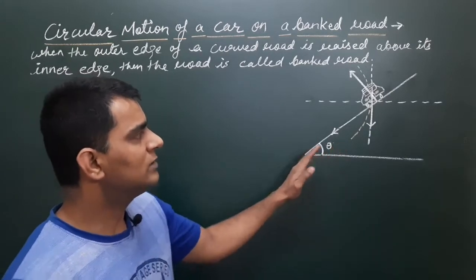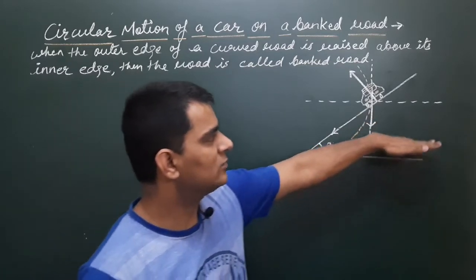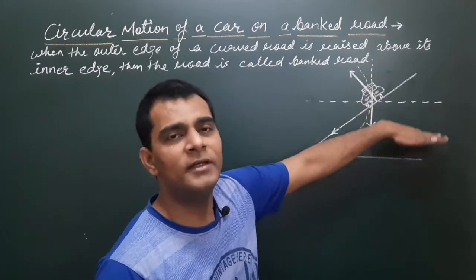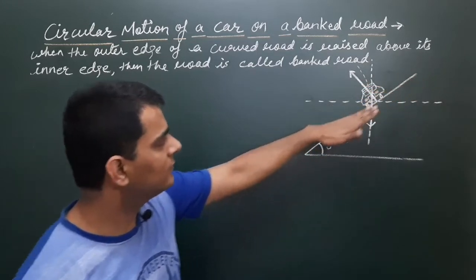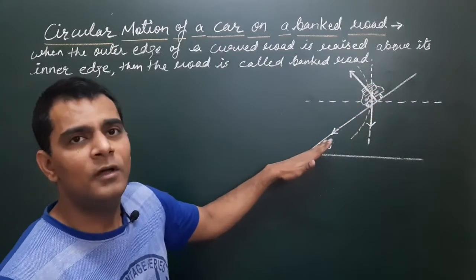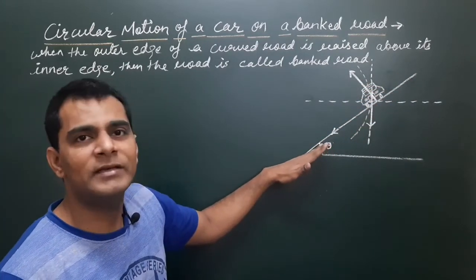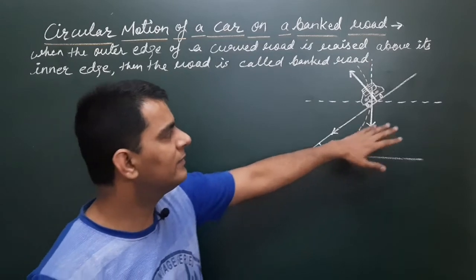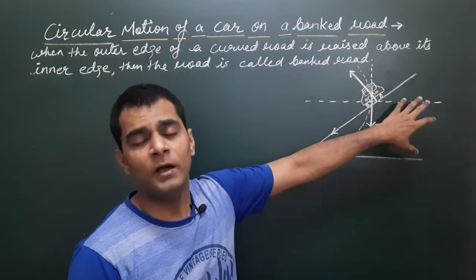Suppose this is the road — one edge is raised above the other. This raised edge is the higher edge and the other is the lower edge. Then it is called the banked road.